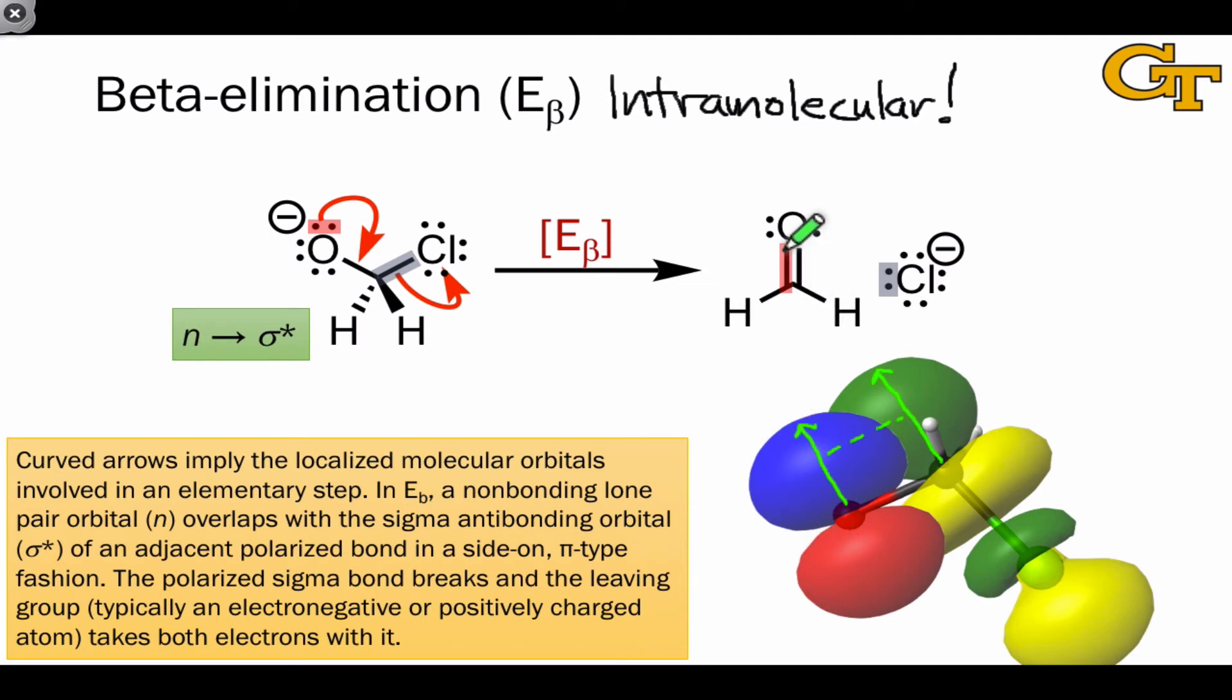Unsurprisingly, this leads to the formation of a pi bond in the product. Beta elimination is common in situations in which a strongly donating pair of electrons, such as those in a non-bonding lone pair at an anionic or less electronegative atom, are adjacent to an atom bearing an electronegative atom or group, such as a halogen.